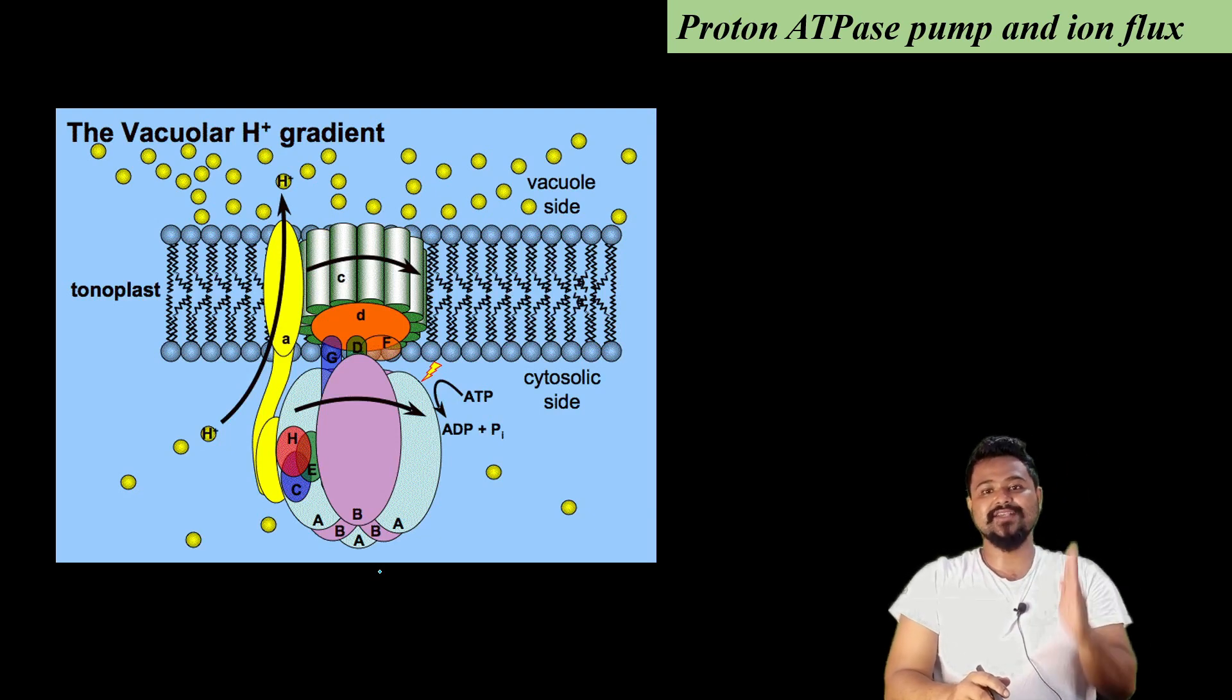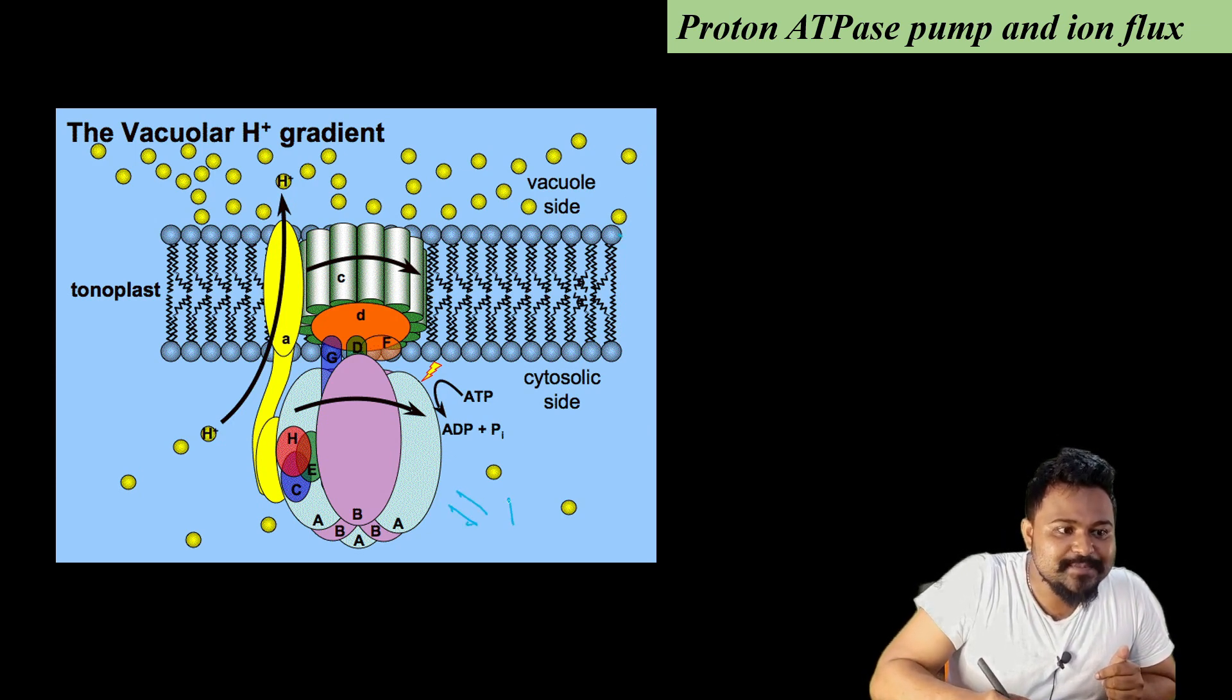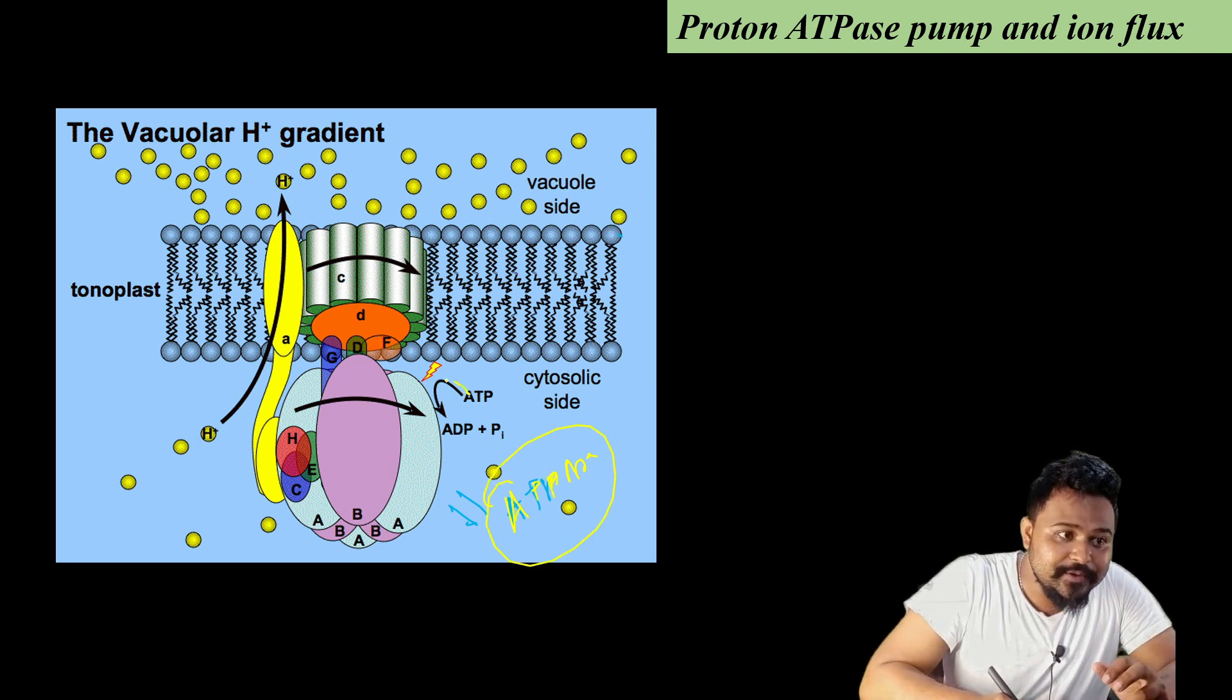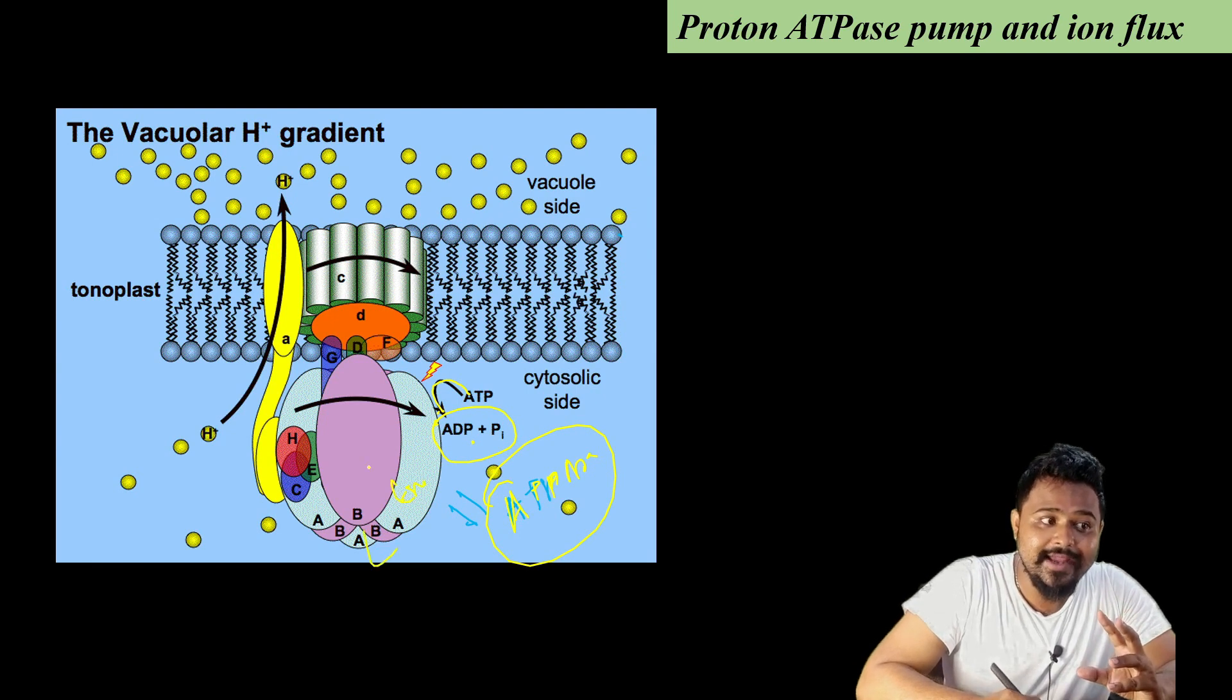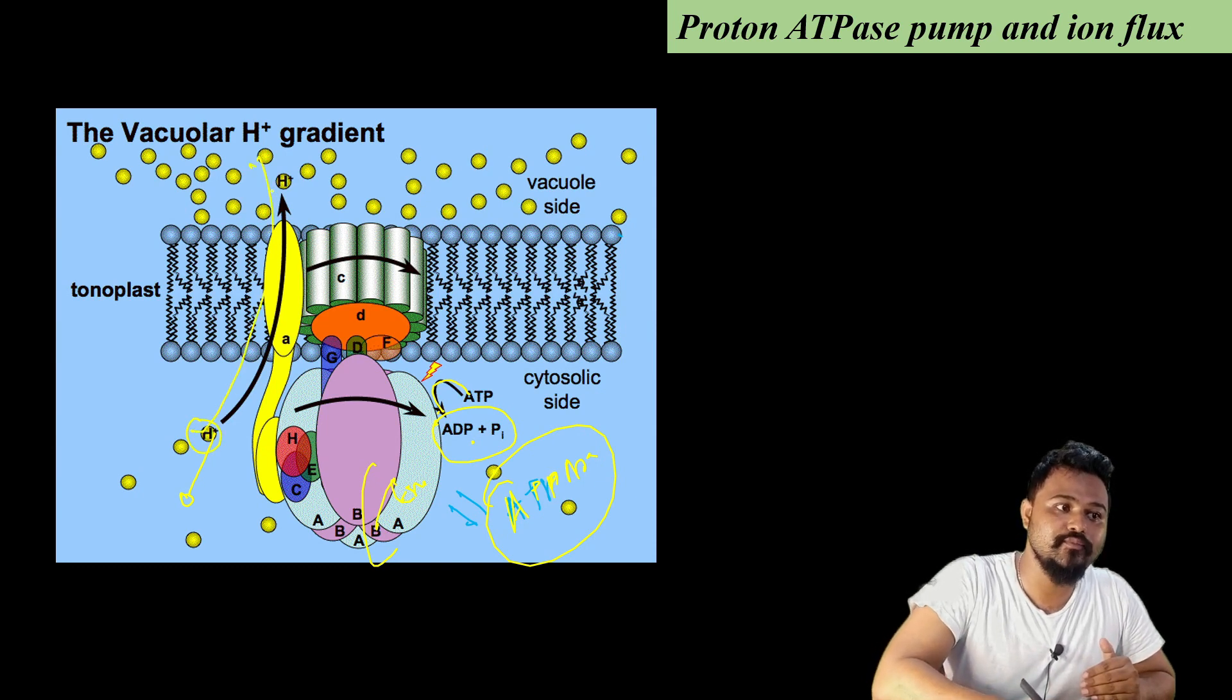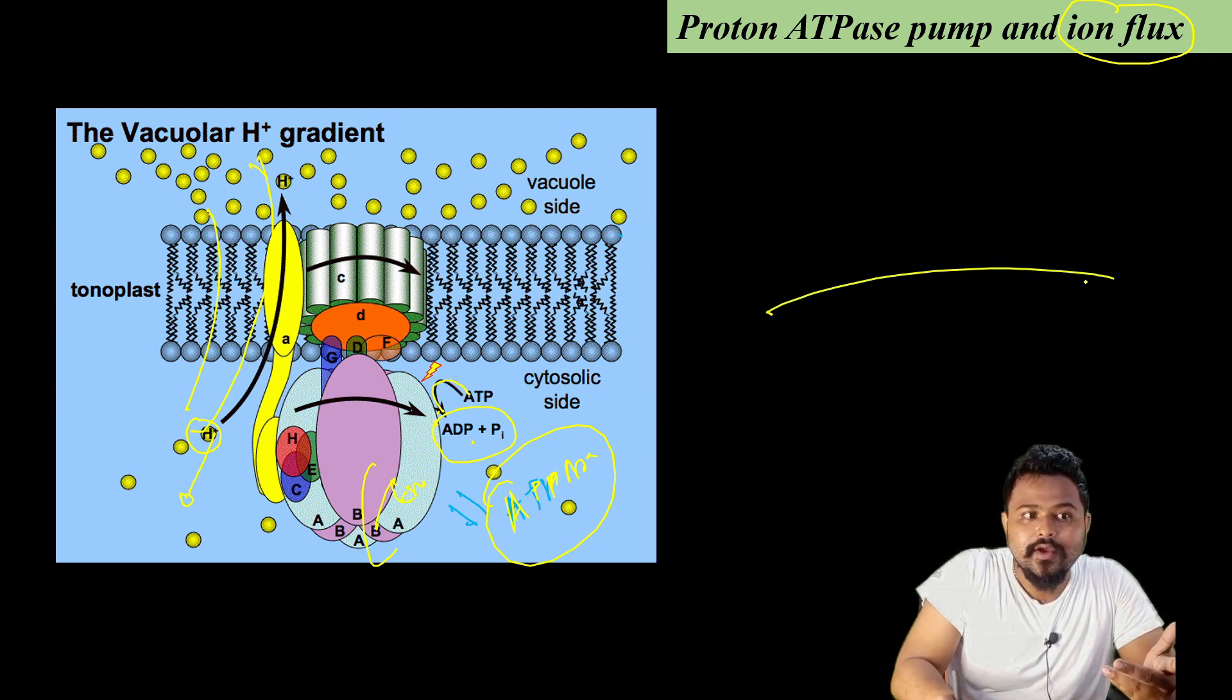Finally, our last topic is the proton ATPase pump and ion flux. The cell membrane has ATPase pumps. What do these ATPase pumps do? ATP breaks down into ADP and inorganic phosphate. When inorganic phosphate is released, energy is released. This energy is used to move hydrogen ions across the cell membrane from inside to outside, or outside to inside - this movement is called ion flux.